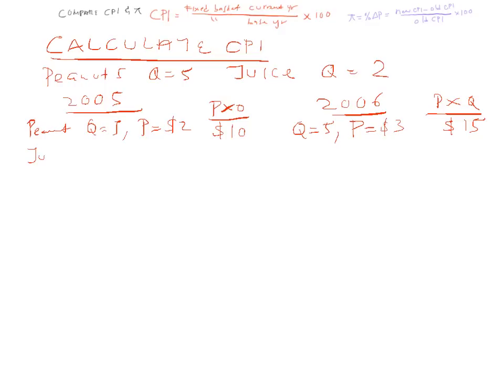And then we have the juice. Quantity is 2 in both periods. Let's say the price is $5 in 2005, so the total is $10. 2006, quantity is fixed at 2. Let's say the price is $4. Total quantity is 8.